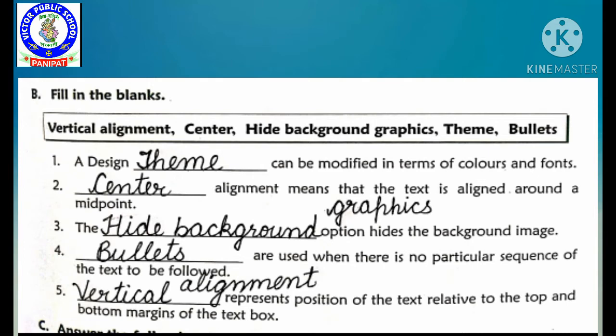Third: the dash option hides the background image. Kaun sa option background ki image ko hide karta hai — our answer is hide background graphics. Fourth: dash are used when there is no particular sequence of the text to be followed. Jab koi particular sequence ya series nahi hoti follow karne ke liye — our answer is bullets. Fifth: dash represents position of the text relative to the top and bottom margins — our answer is vertical alignment.